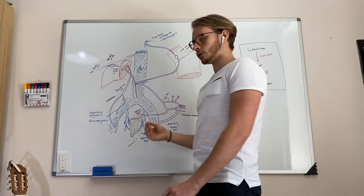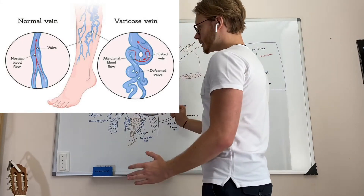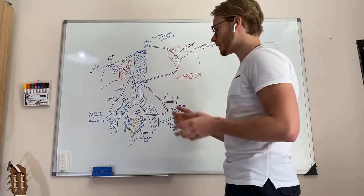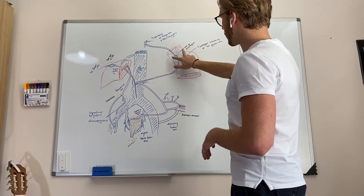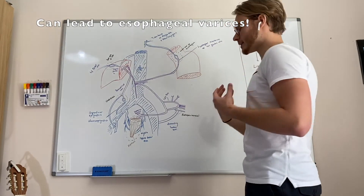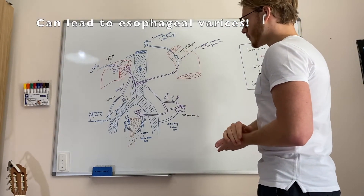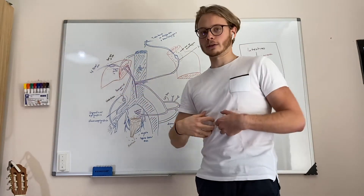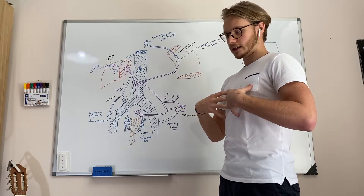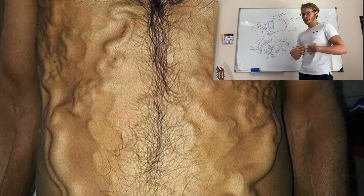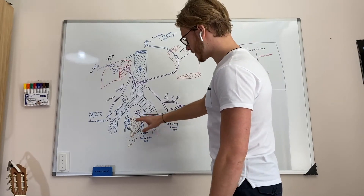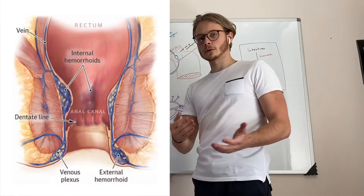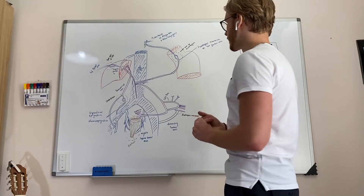So what happens to these veins? We will have something called varicose veins — enlarged veins. If they get too large and the hypertension is too great, they can burst and cause very severe effects. For example, in the lower esophagus, blood collecting there is very dangerous. One of the most striking images is with the paraumbilical veins: you get something called caput medusae — a very disturbing image of enlarged veins popping out around the umbilicus. And the venous plexus around the rectum is called the hemorrhoidal plexus, so if you have hypertension there, you can get hemorrhoids. That's it about the portocaval anastomosis.